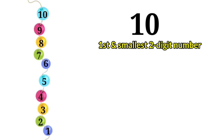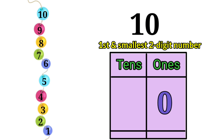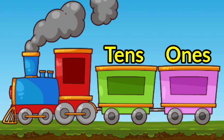In a two digit number, the digit on the right side is written in ones place. Ones place is also called as units. The number on the left side is written in tens place. It is also called as ten ones, or ten units, or one ten and zero ones.